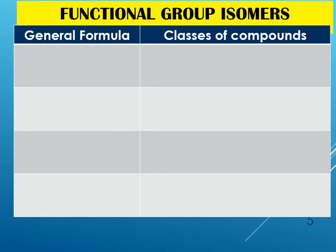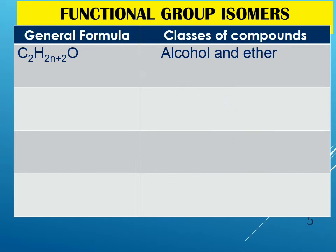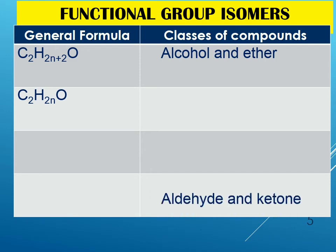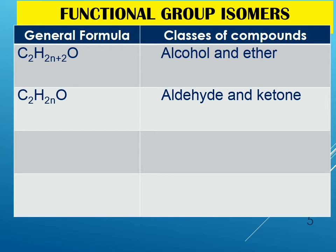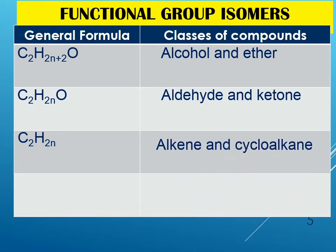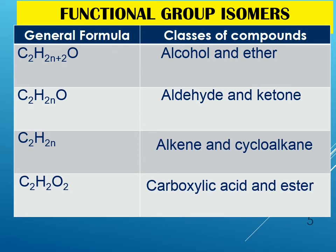Functional group isomers are compounds with the same molecular formula but different structures in terms of functional group, meaning they belong to different homologous series. For the general formula CₙH₂ₙ₊₂O, we can relate the functional group isomers of alcohol and ether. For CₙH₂ₙO, an aldehyde has functional group isomers with a ketone. For CₙH₂ₙ, an alkane has functional group isomers with a cycloalkane. And for CₙH₂ₙO₂, a carboxylic acid has functional group isomers with an ester. Keep these relationships in mind — it will be easier to draw functional group isomers.